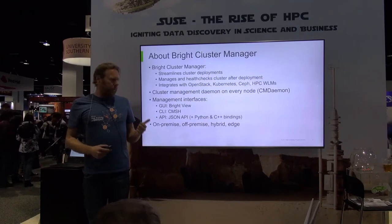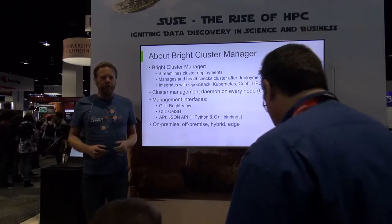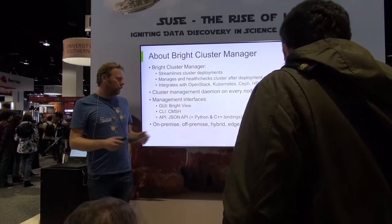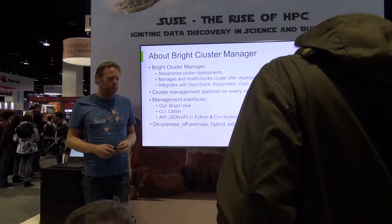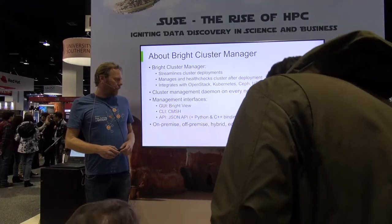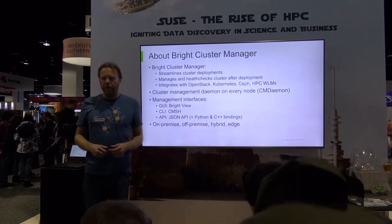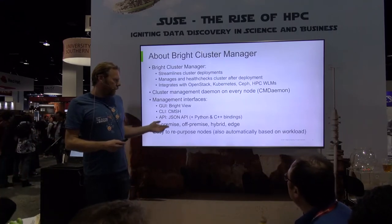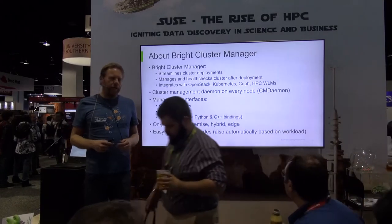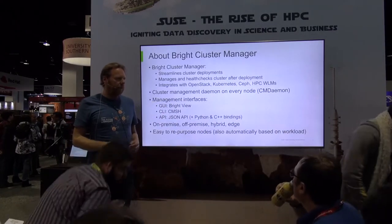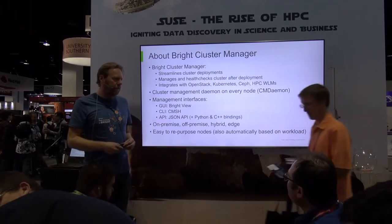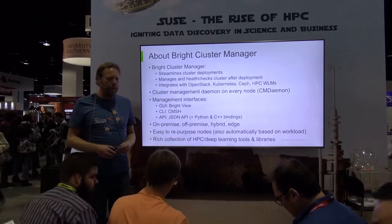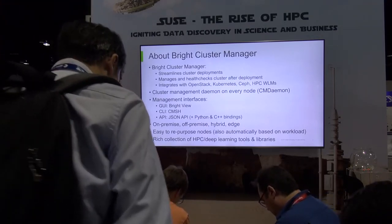You can build Bright clusters on-premise, off-premise in the cloud, and in hybrid situations — for example, a cluster running on-premise that extends into AWS or Azure, where those cloud nodes look and feel exactly the same as your local nodes. The main topic for today is edge: geographically distributed clusters spanning several edge locations. It's also very easy to repurpose nodes on the fly — a node running Kubernetes right now could be running an HPC scheduler moments later. We also provide a rich collection of HPC and machine learning tools and libraries.